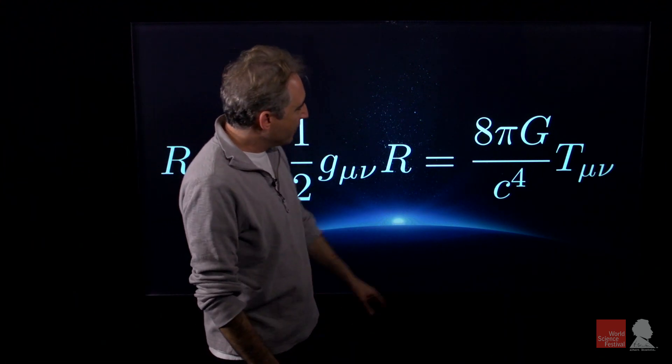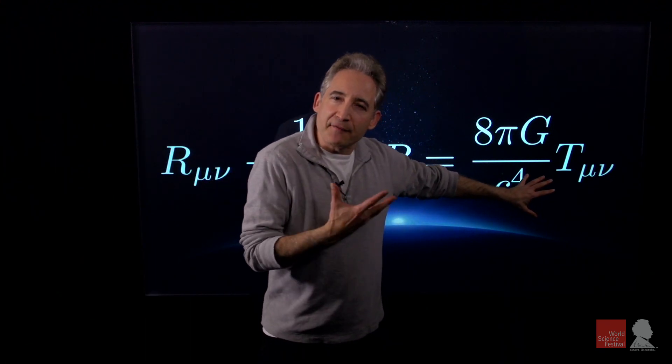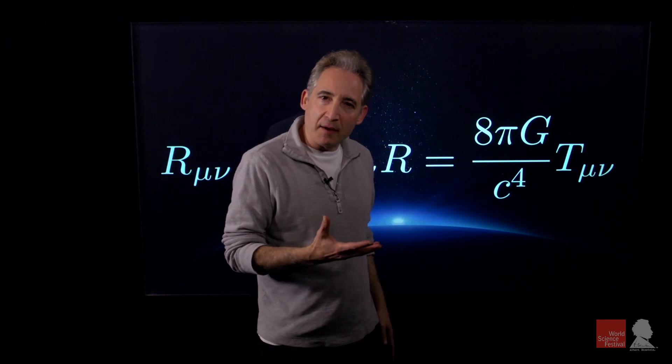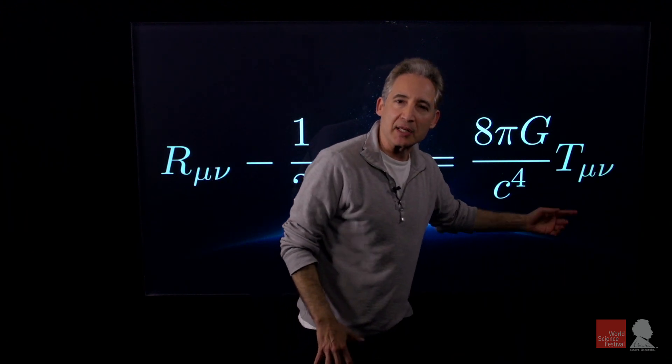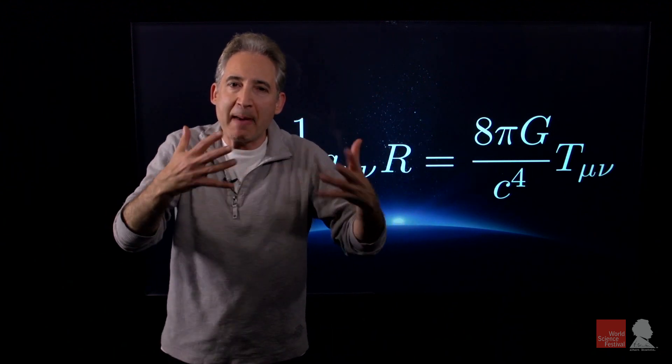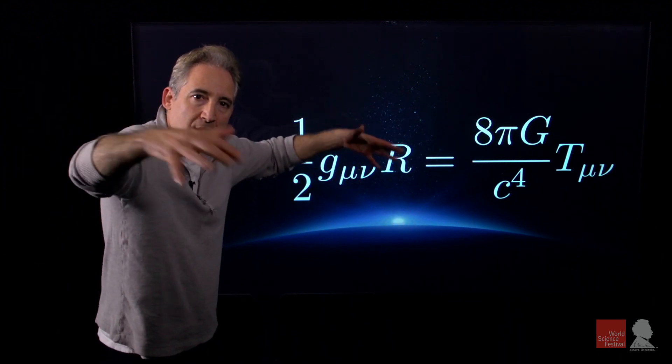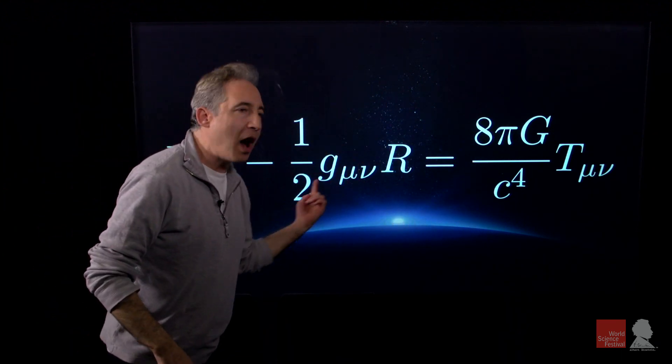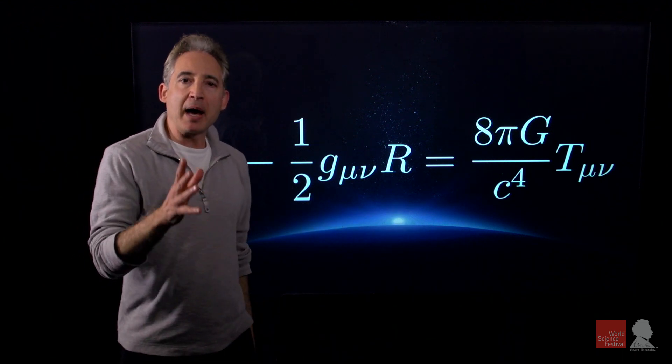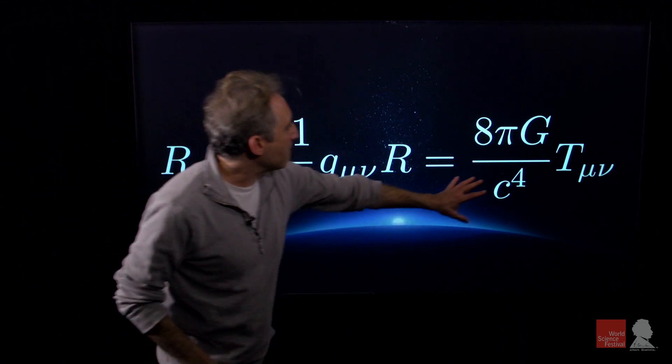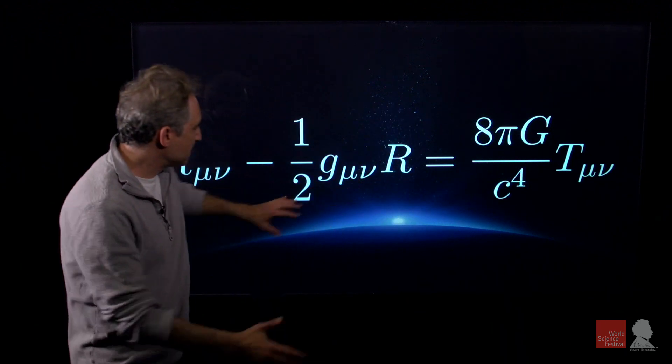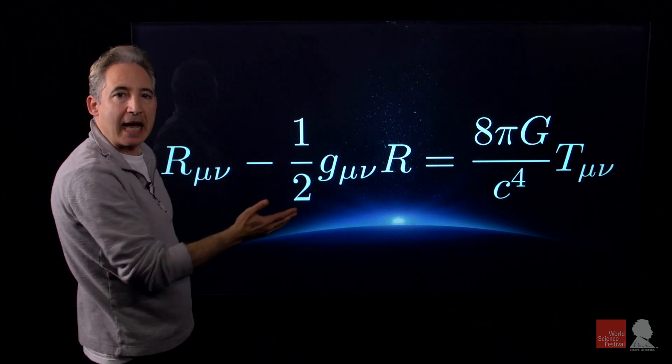The right hand side describes the stuff in a region of space, moving through a region. This is known as the stress energy tensor and it describes all of the matter and energy within the environment. And the equality between the two embodies the heart of Einstein's idea that matter and energy warps the fabric of space and time.